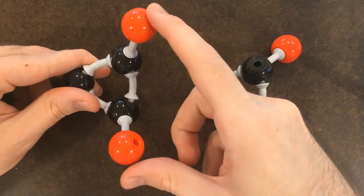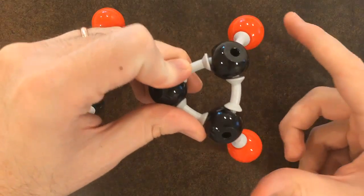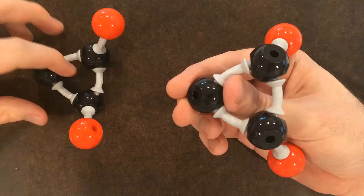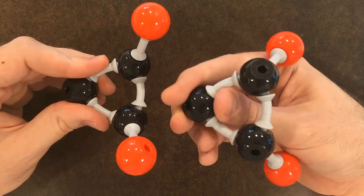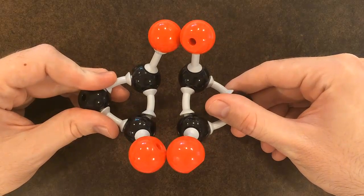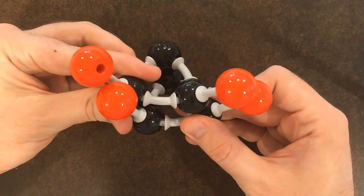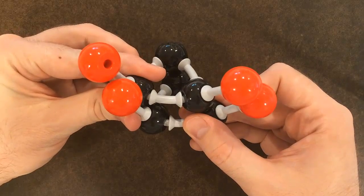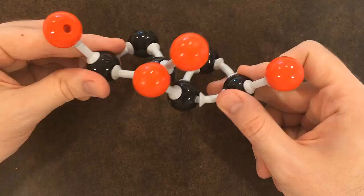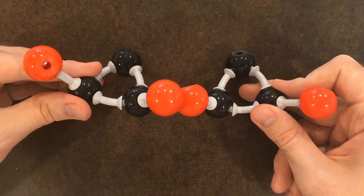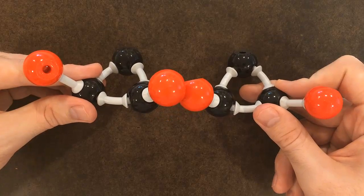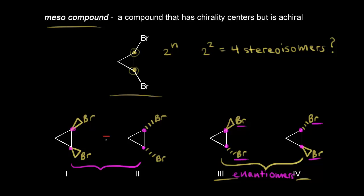On the left is a model of drawing one, with the two bromines coming out at us in space. On the right is a model of drawing two, with the two bromines going away from us in space. If I rotate the model on the right, we can see that these are mirror images of each other. But they are superimposable mirror images — if I put that one on top of the other, you'll see that they are superimposable. So these actually are two models of the same molecule. This is a mesocompound — a compound that has chirality centers but is achiral. The mirror image is superimposable on itself.